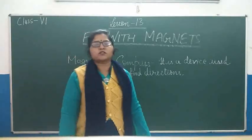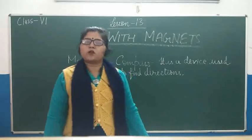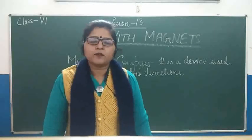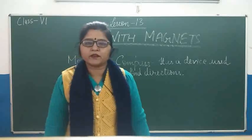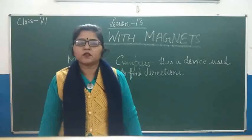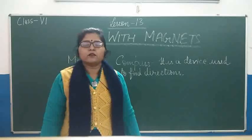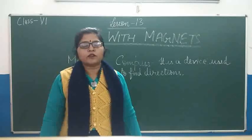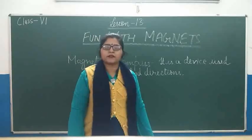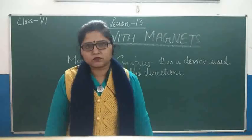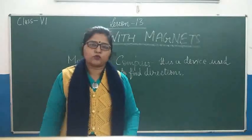The substances which are attracted by the magnet are called magnetic substances, and the substances which are not attracted by the magnet are called non-magnetic substances. We also read about the different properties of magnets, like a magnet has two poles: north pole and south pole.